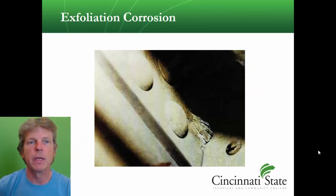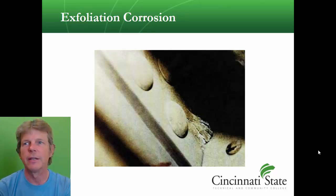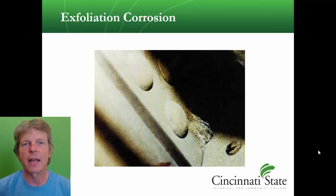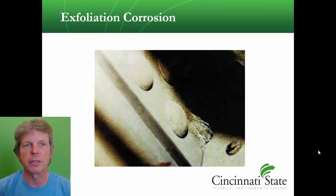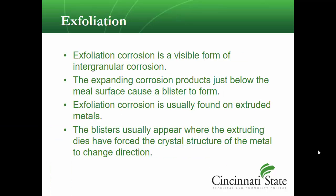Here are more examples of exfoliation. If you think of exfoliation like skin — you know those commercials on TV where they're showing an overpriced loofah that you rub on your skin to get the dead cells off — well, that's what this is like with metal. It's like the skin coming off in layers. That's what exfoliation is. It's a visible form of intergranular corrosion.